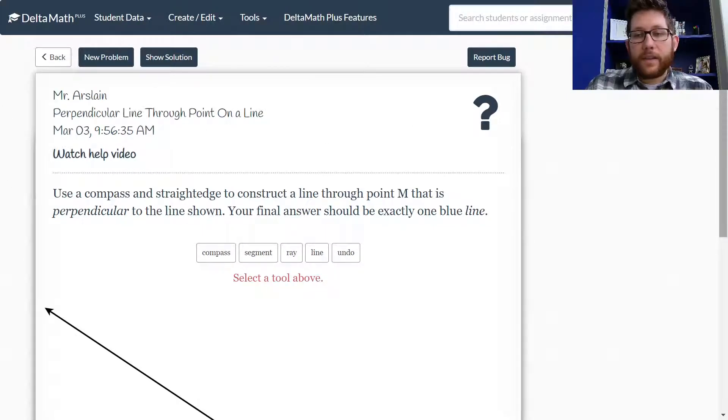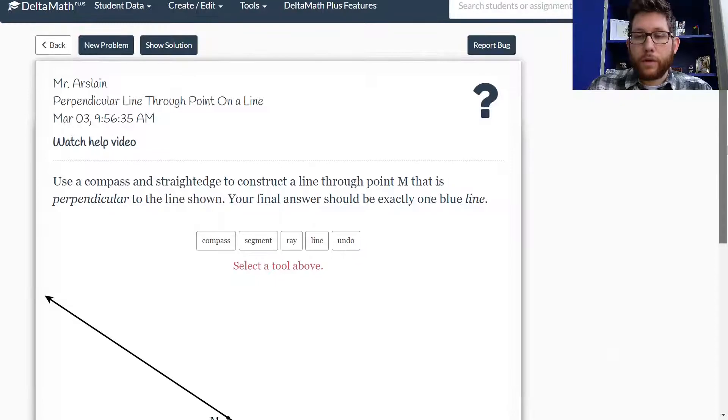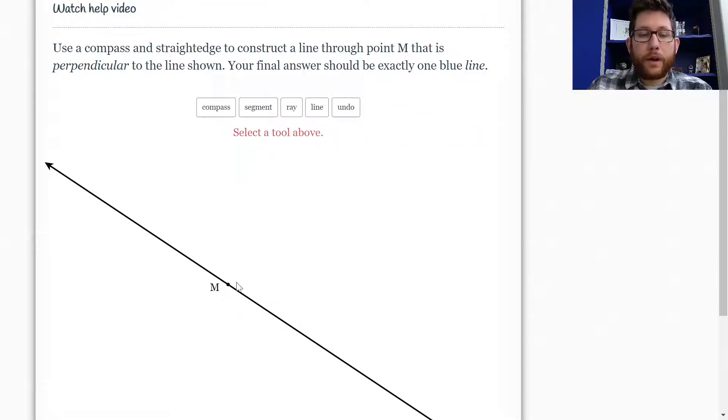Let's think about the construction name, which gives us an idea of what we're doing. Perpendicular line through a point on a line means we've got an original line with a point on the line, point M, and we want a perpendicular line through this point.